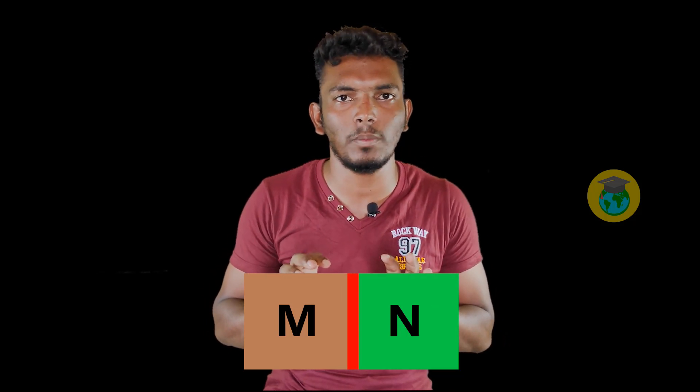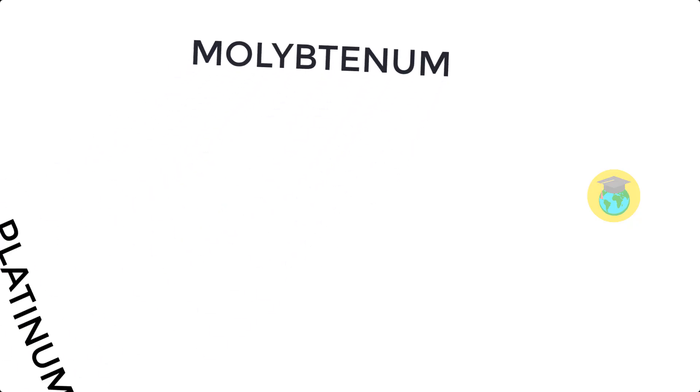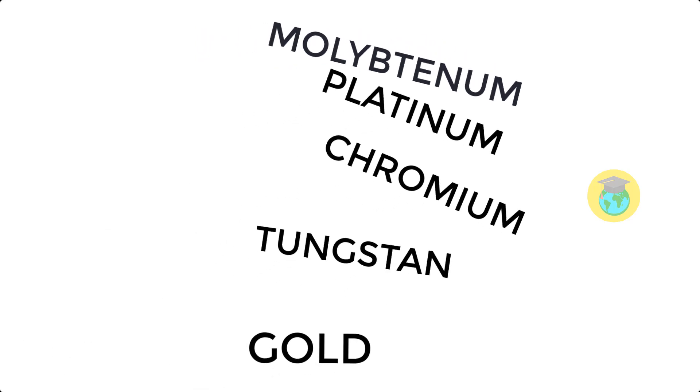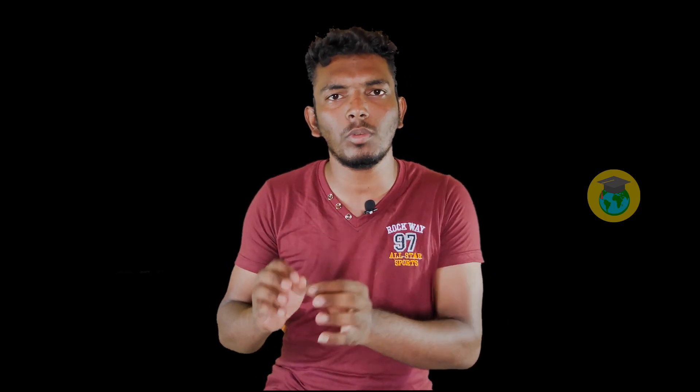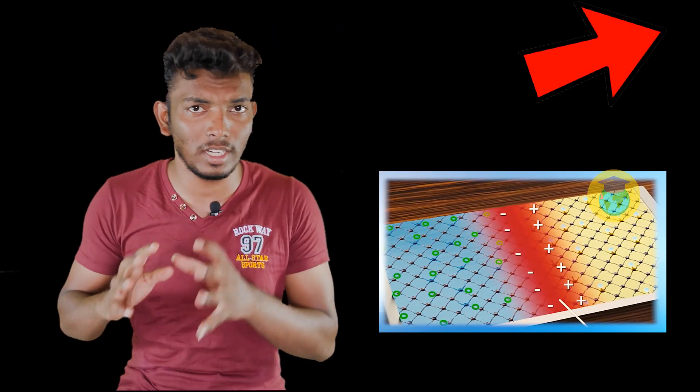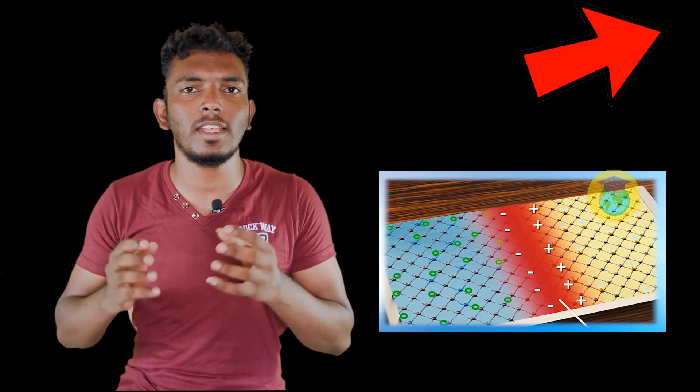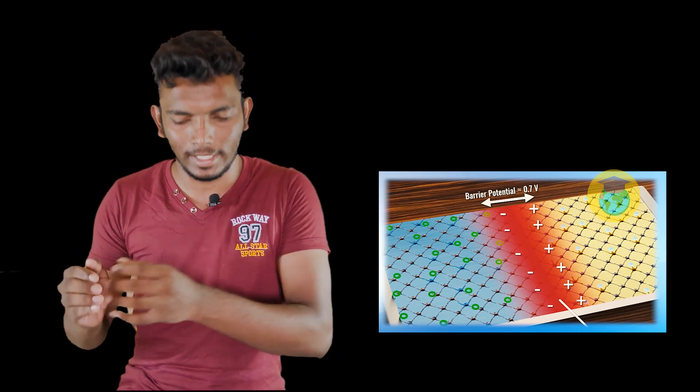If you look at the Schottky barrier of this metal, we can see how electrons and holes move in the diode and how much current conduction takes place.